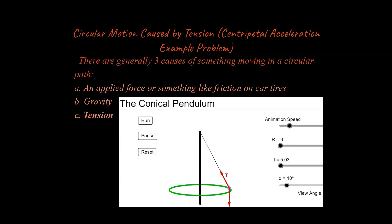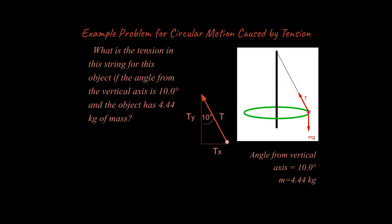All right, let's work through our strategies to be able to solve this problem. So the problem says, what is the tension of the string for the object if the angle from the vertical axis is 10 degrees and the object has 4.44 kilograms of mass. So I've gone ahead and written down the given information over here.